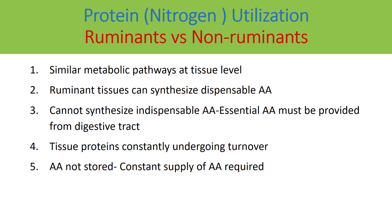However, in ruminant animals, their tissues are able to synthesize dispensable amino acids, but they cannot synthesize indispensable or essential amino acids — these must be provided from the digestive tract. The synthesis of non-essential amino acids is similar in both ruminant and non-ruminant animals, and neither can synthesize essential amino acids, so they must be present in the digestive tract for absorption.